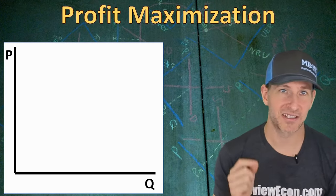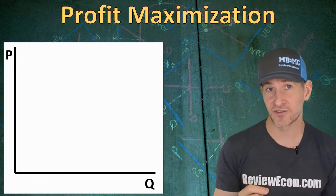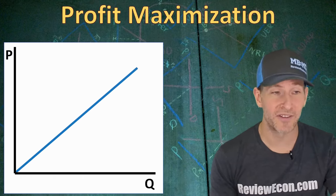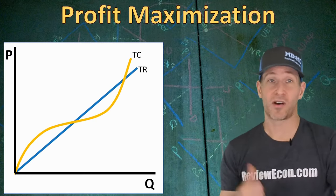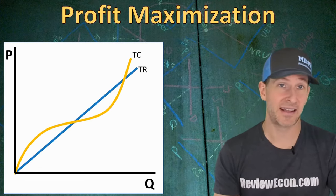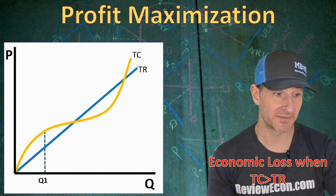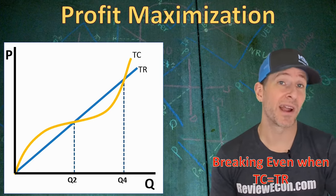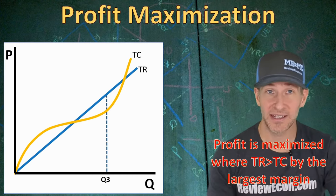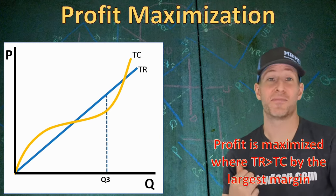Next, we're going to talk about profit maximization. The motivation behind any firm's level of production is the profit motive, and the assumption in economics is that rational firms profit maximize. We can find the profit-maximizing quantity by comparing total revenue to total cost. Total cost increases at an increasing rate, then at a decreasing rate, then at an increasing rate again. At quantities where total cost exceeds total revenue, the firm earns economic losses. Where total cost equals total revenue, the firm breaks even. The profit-maximizing quantity is where total revenue exceeds total cost by the largest margin, marked as Q3 on the graph.